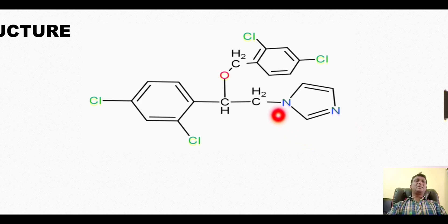For imidazole, this is position number one, then two, three, four, and five. On position number one we have the presence of this two-carbon chain, so it is a derivative of ethyl. The basic nucleus is called ethyl imidazole. For ethyl, this is carbon number one and this is carbon number two.